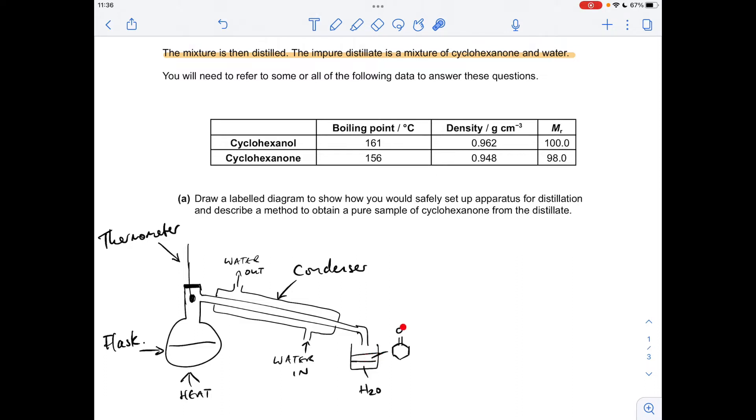So what we need to do now is transfer this into a separating funnel. We then need to run out the two layers and collect the upper organic layer which is the cyclohexanone. Now there's always small traces of water in the organic layer so you would add a drying agent to absorb that and it's always a good idea to give an example and the one I always use is anhydrous calcium chloride. And then finally you would filter that and then re-distill and collect the fraction that boils off at 156 degrees C. That's the boiling point of cyclohexanone.